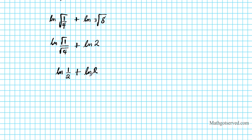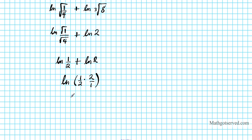Now we have uniform logarithms and can condense. Using the product property since we have addition, we get the natural logarithm of one-half times 2, which is two over two, simplifying to the natural logarithm of 1. This can be written as the natural logarithm of e to the zero power, because any number to the zero power — other than zero itself — is 1. Natural logarithm and e are inverses, so they cancel each other out, giving a final answer of zero.